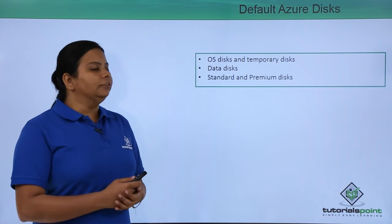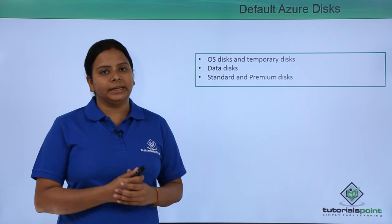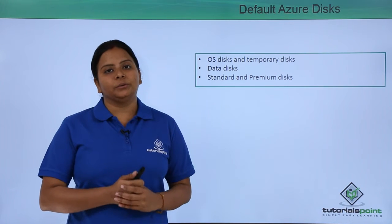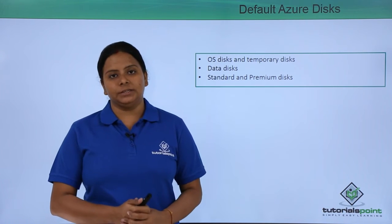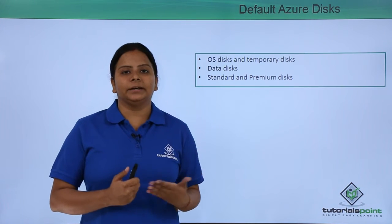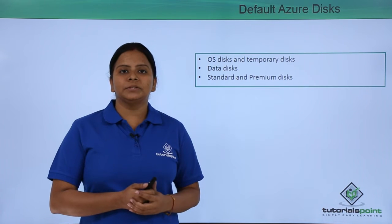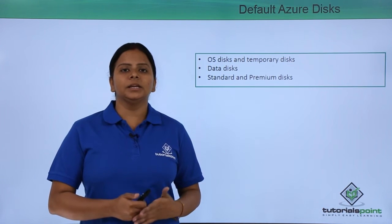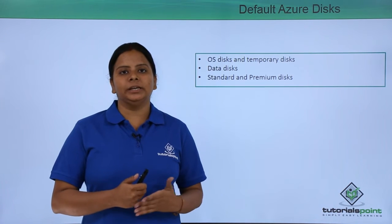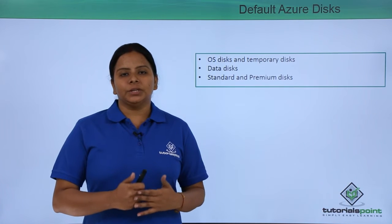The default disks or default storage available to store data are of three types. One is your OS disk or the temporary disk generally available in your VM. When you create your virtual machine you generally get this kind of standard disk. Next we have the data disk — as discussed in our previous video, we can create a new disk and add it to your virtual machine to store data.